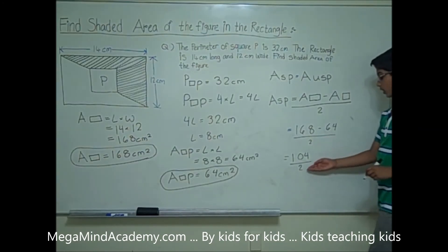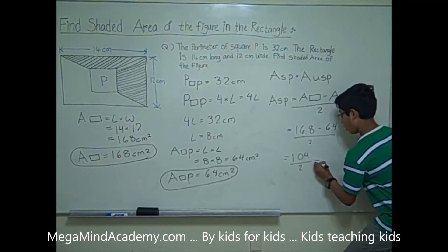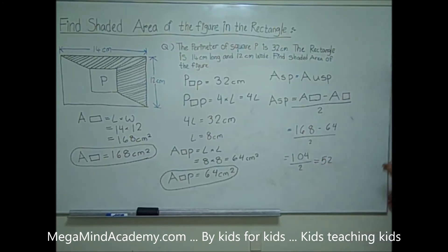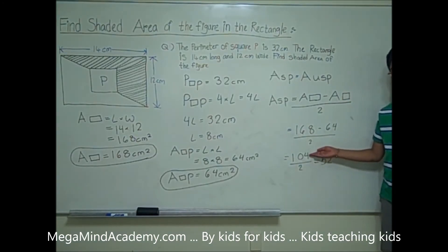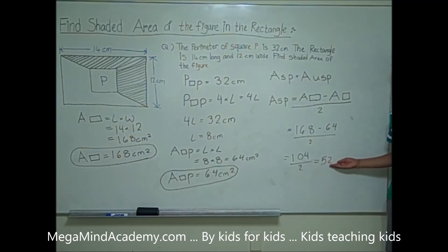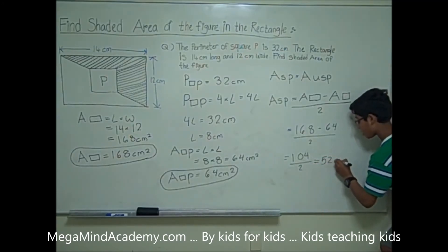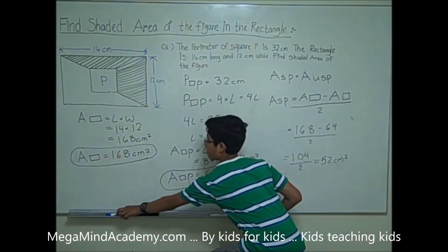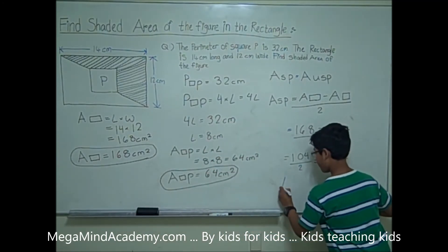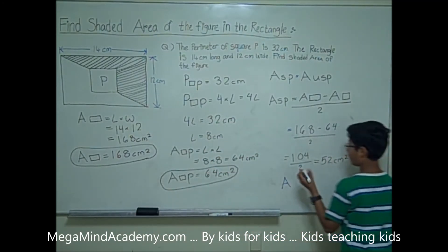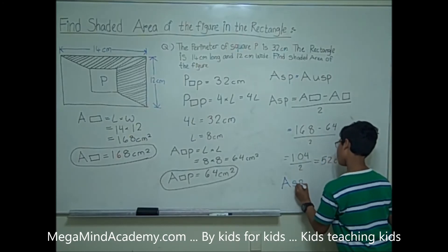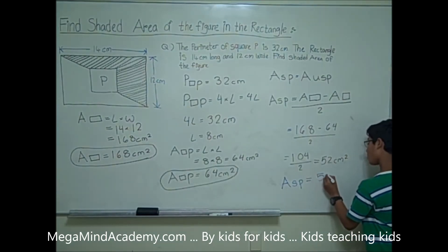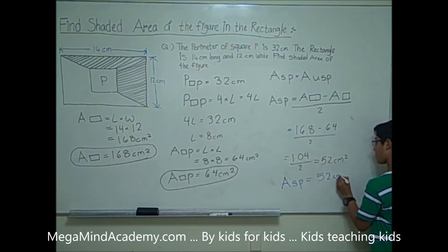104 over 2 is equal to 52, because 104 divided by 2 is 52. So the area of the shaded part is equal to 52 centimeters squared.